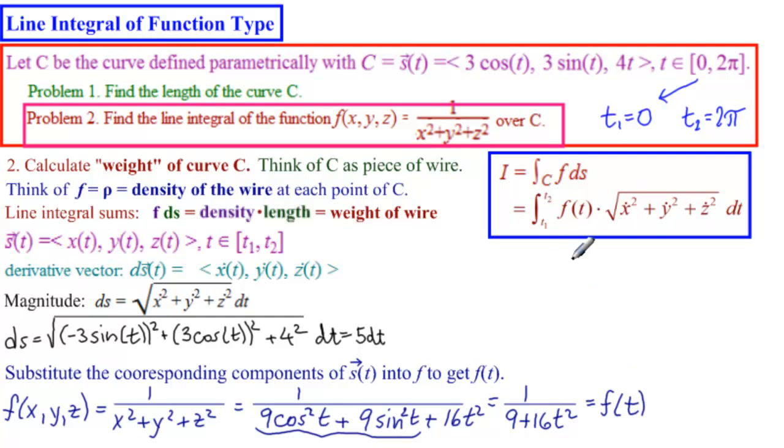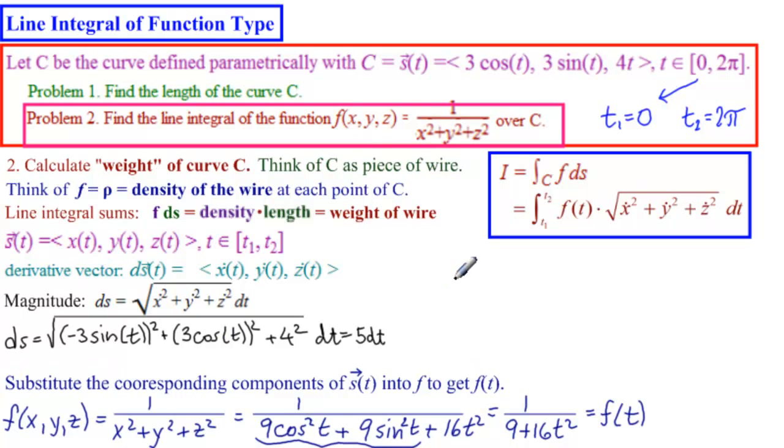So now we have everything in t ready to figure out the line integral of this function over C. So what do we get? We get i equals, we need to go from t1 to t2, so 0 to 2π. We need f of t, which is 1 over 9 plus 16 t squared. And then we need times 5 dt.